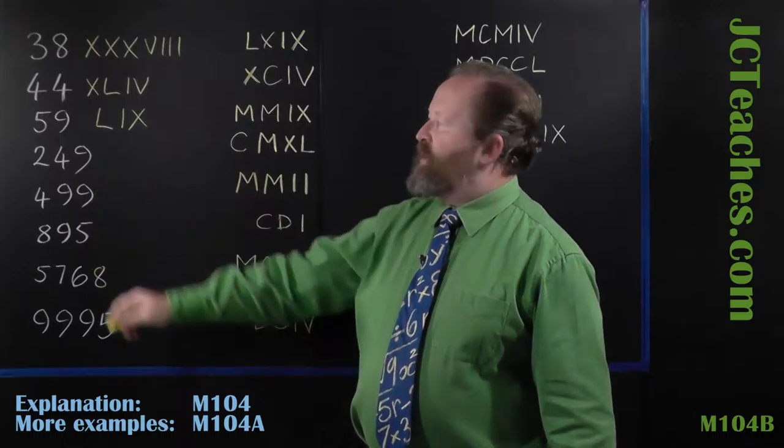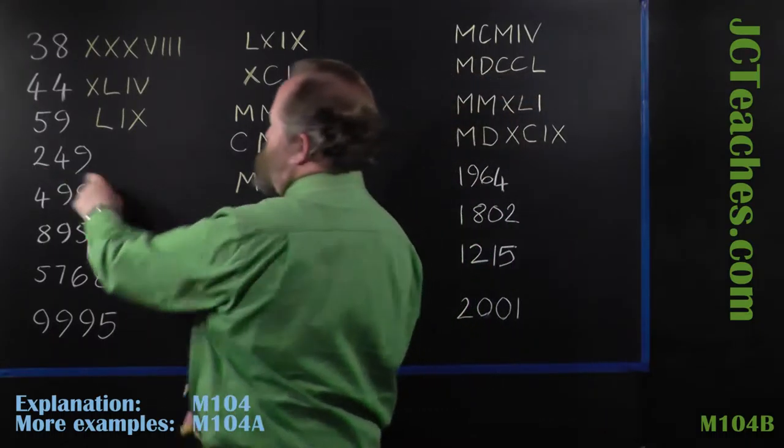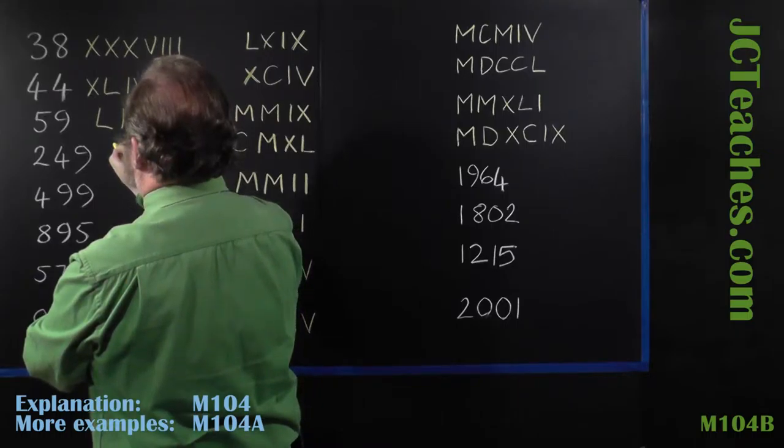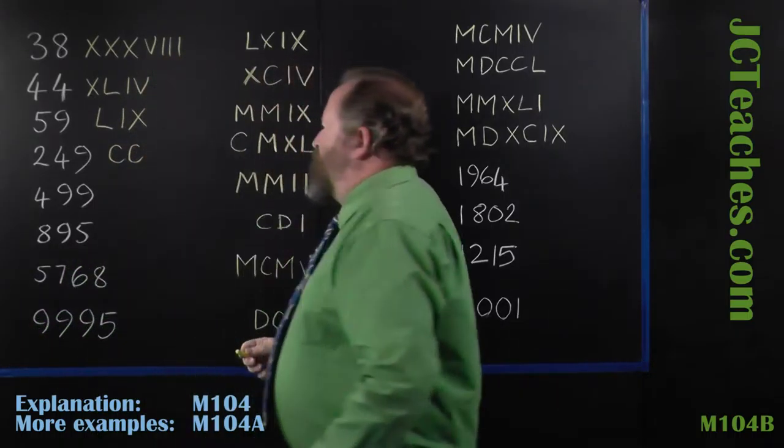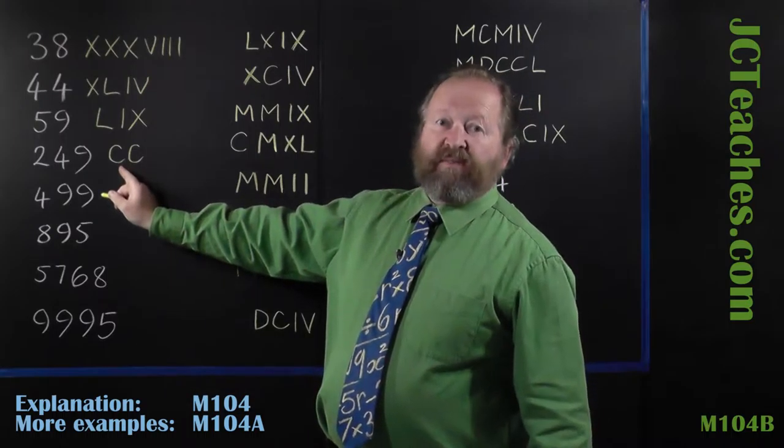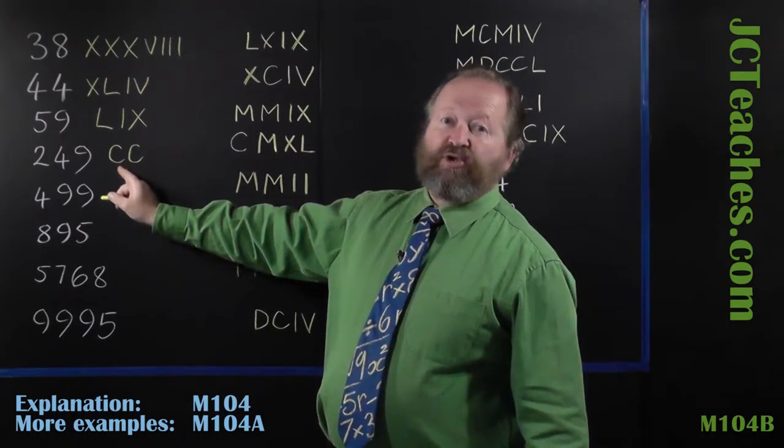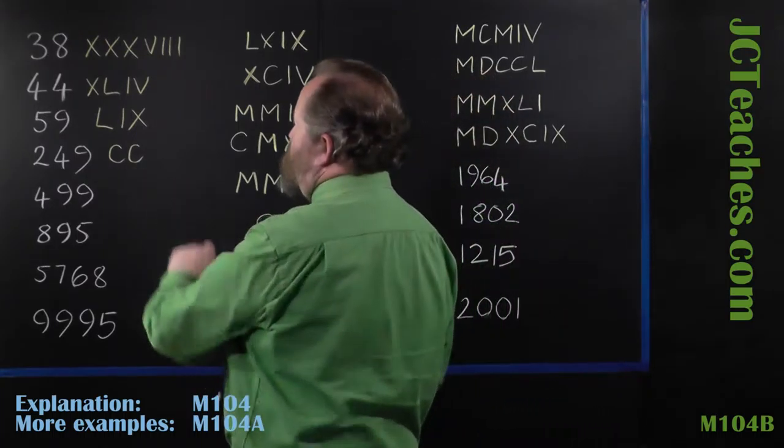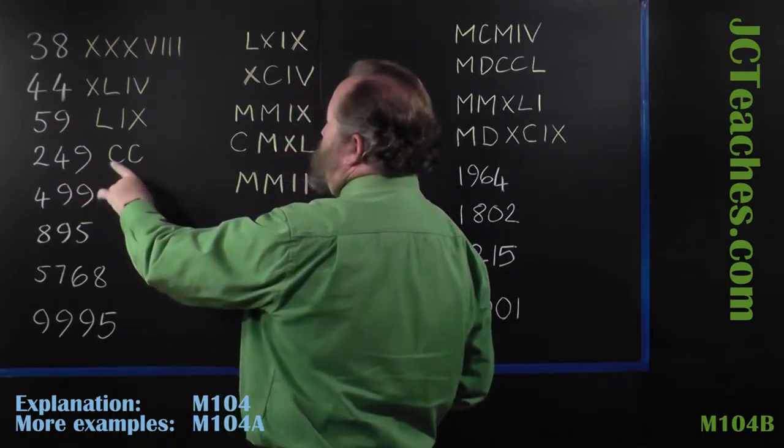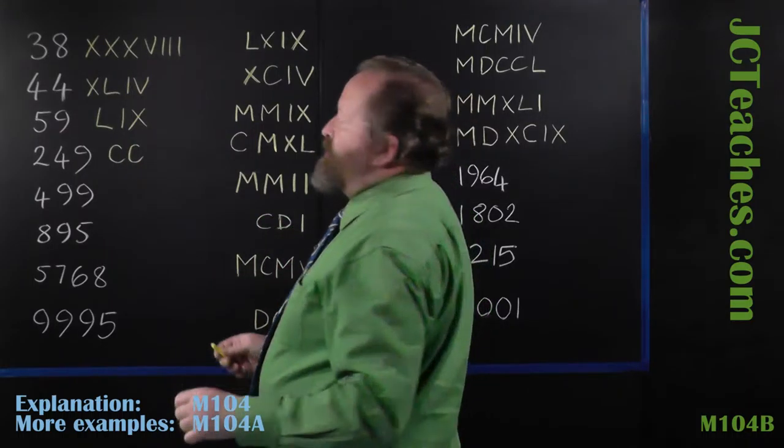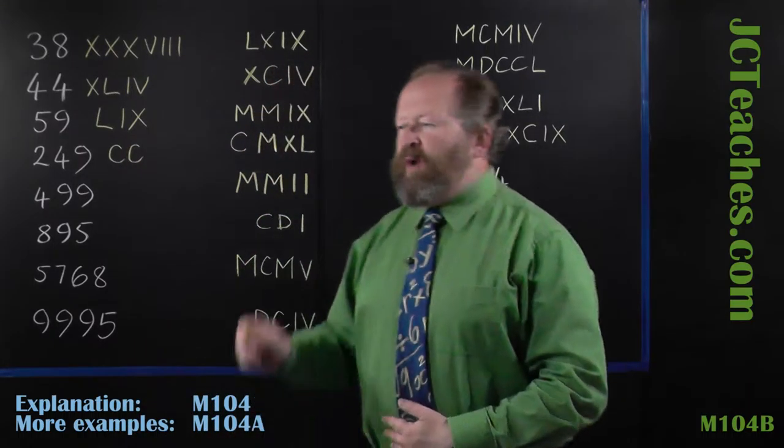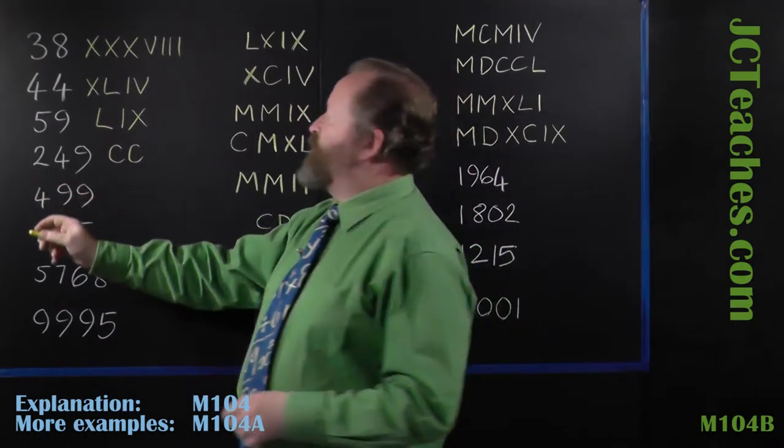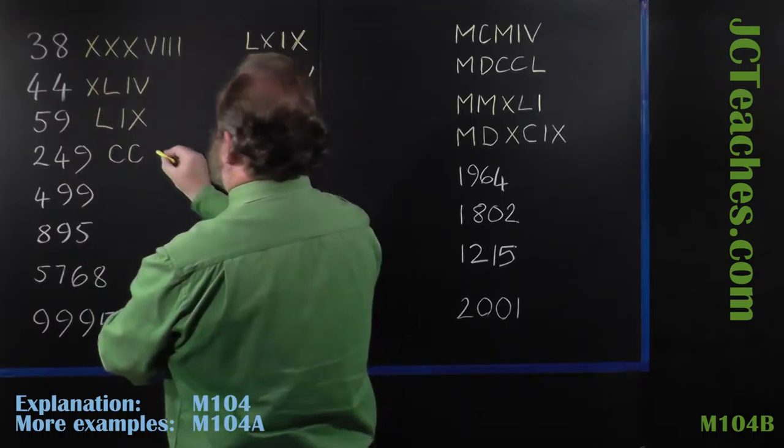249. Hundreds first, we've got 200 which is CC. A way of remembering that C stands for a hundred is that C for century, and a century is a hundred years. 200, and 49 we've got to do tens first. We can't just have a one and then the 50, that doesn't work. So we've got hundreds, now we do tens, and 40 is XL, then we have the nine.